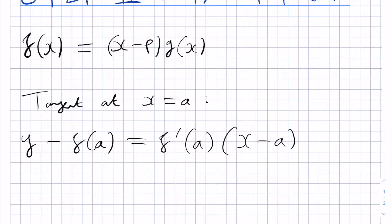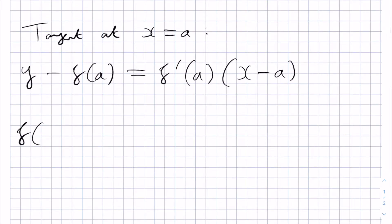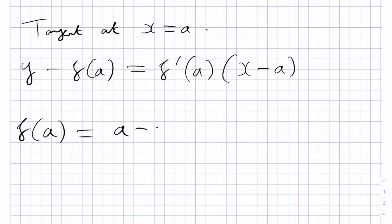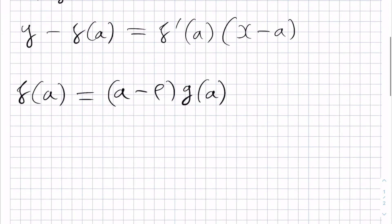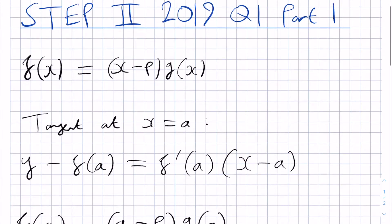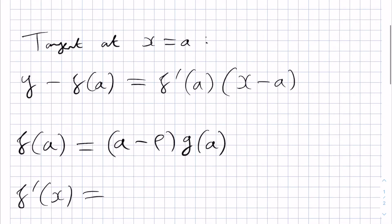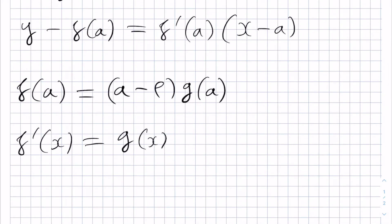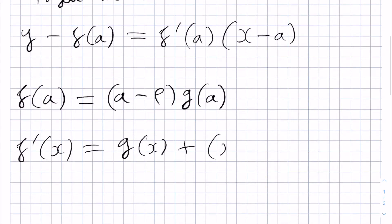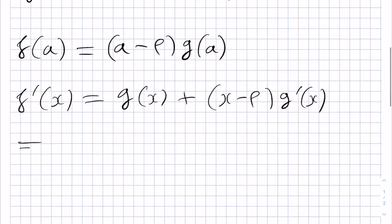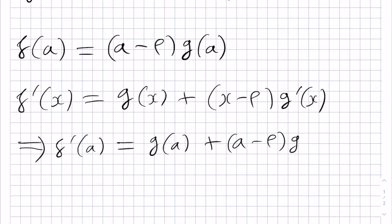Now we need to calculate f of a and f prime of a. Firstly, f of a is quite simple — we just get a minus p times g of a. Next, we need f prime of a, so let's calculate f prime of x in general. Using the product rule, we differentiate x minus p to give us 1, and so we have g of x, or we leave it alone and get x minus p times the derivative of g. Therefore, putting in x equals a gives us f prime of a equals g of a plus a minus p times g prime of a.